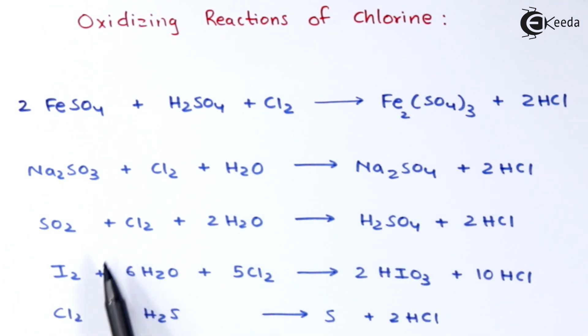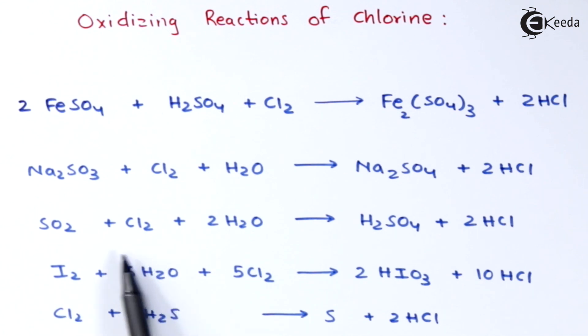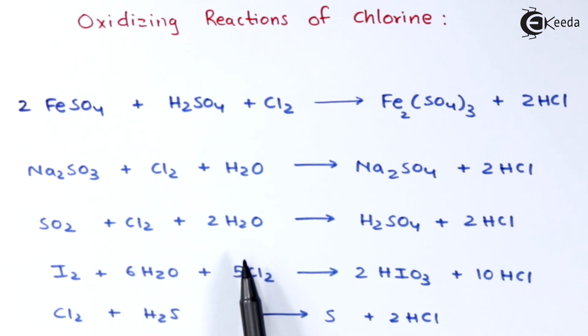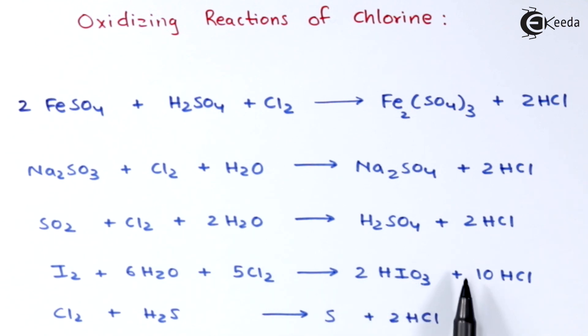The next reaction: whenever iodine is treated with 6 moles of H₂O along with 5 moles of Cl₂, the product we get is HIO₃ along with 10 moles of HCl.